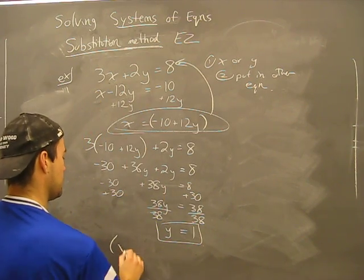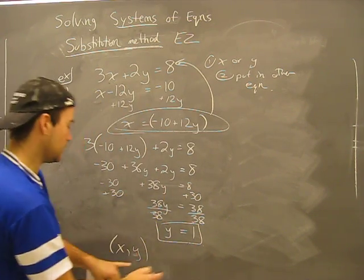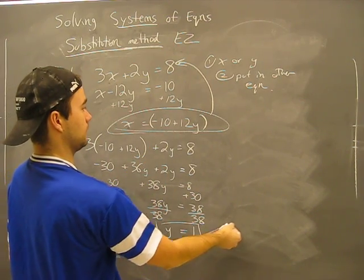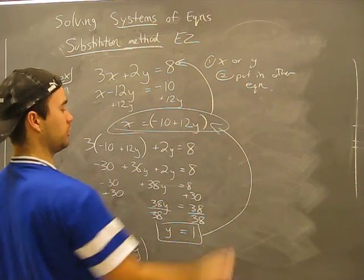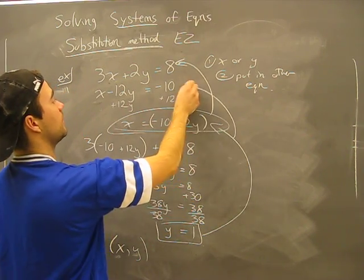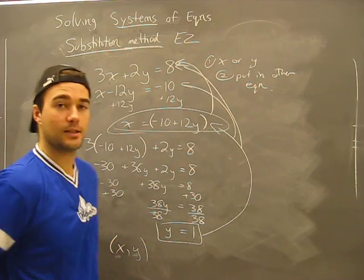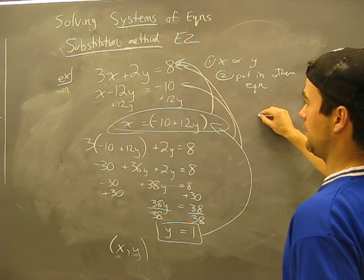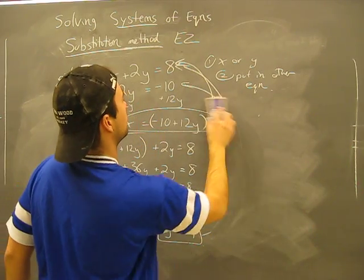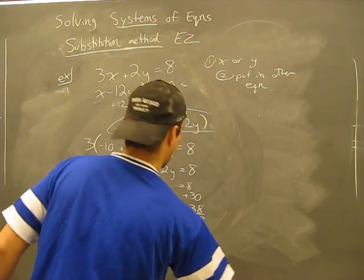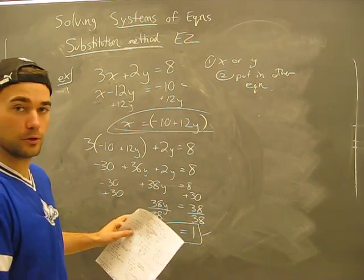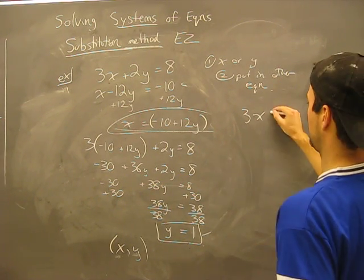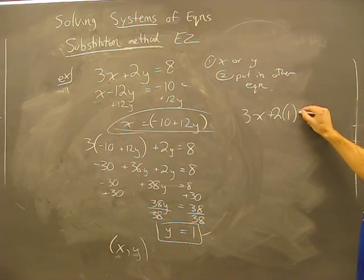We have an x and a y. We have a one number here, we have an ugly mess for this, so it's not good enough. Let's now put this. We can put it in there, we can put it in there, or we can put it there. Three x, y is one, plus two times one equals eight.